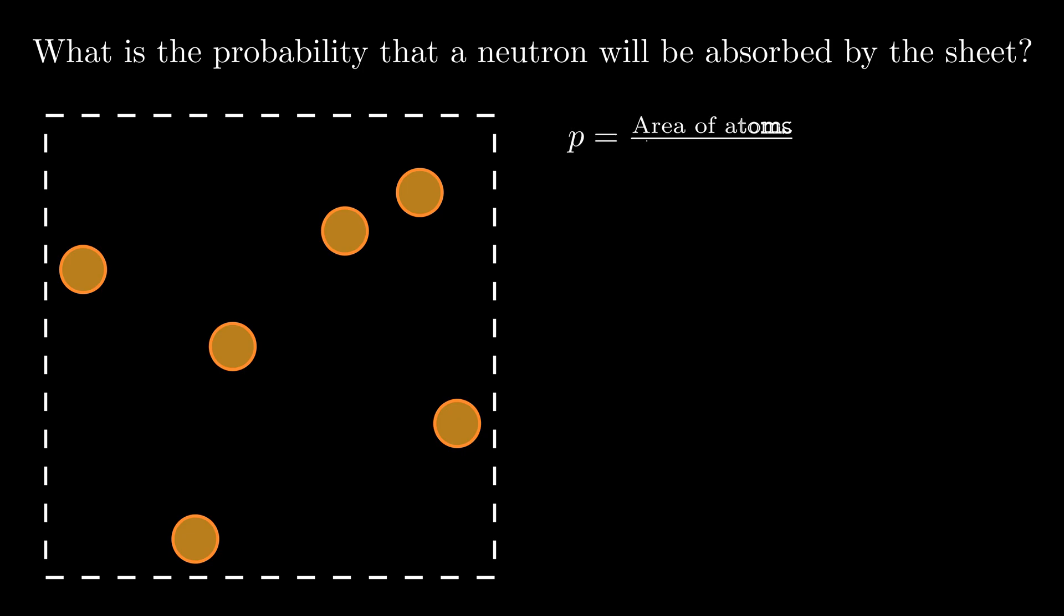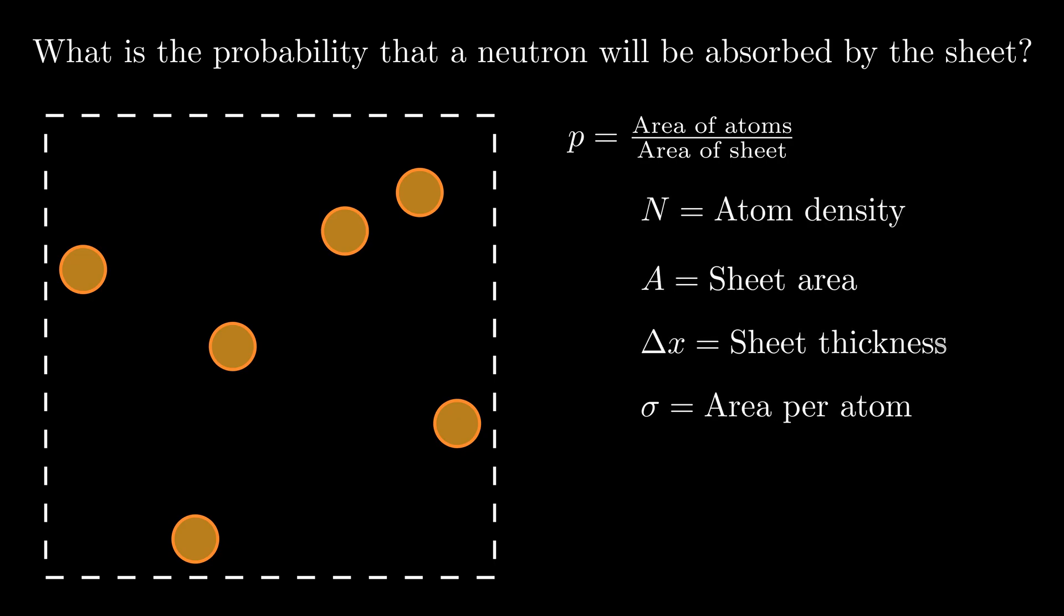So let's come up with a formula for this. We'll represent the area of the sheet with A, and the area of a single nuclei with little sigma. The probability of our neutron being absorbed is therefore just the number of nuclei times little sigma divided by the area of the sheet. To formalize how we can calculate the number of nuclei in the sheet, we can write it as the density of atoms in the sheet, and we'll write this as big N with units of atoms per volume, times the sheet's volume, which will be A times the thickness of the sheet delta x.